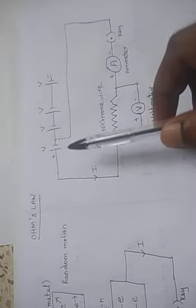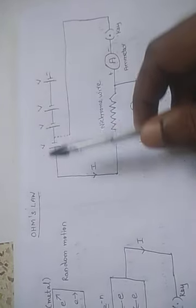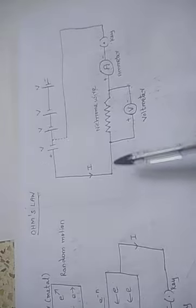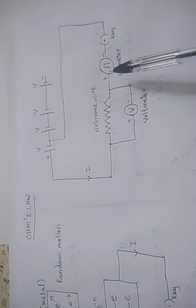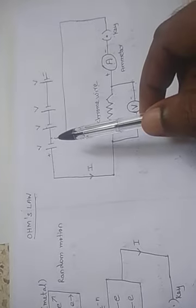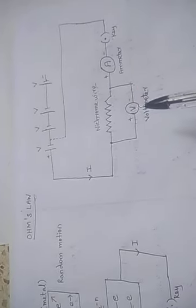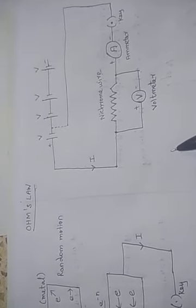This circuit contains four cells. All the four cells are connected in series and these cells are connected with the nichrome wire and the ammeter is also connected in series along with the key, and the circuit will be closed. Note that the voltmeter is connected in parallel, that means across the nichrome wire.